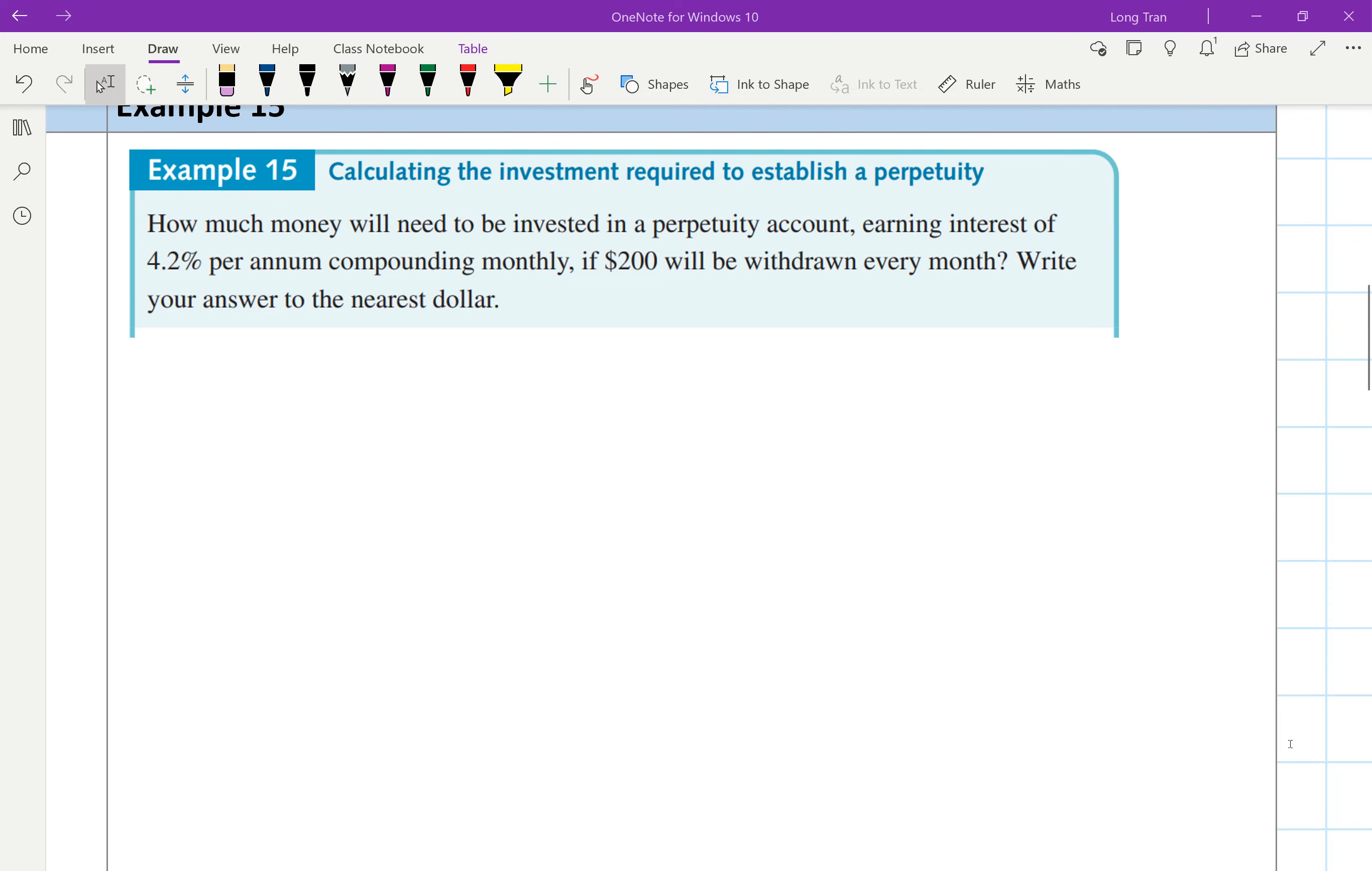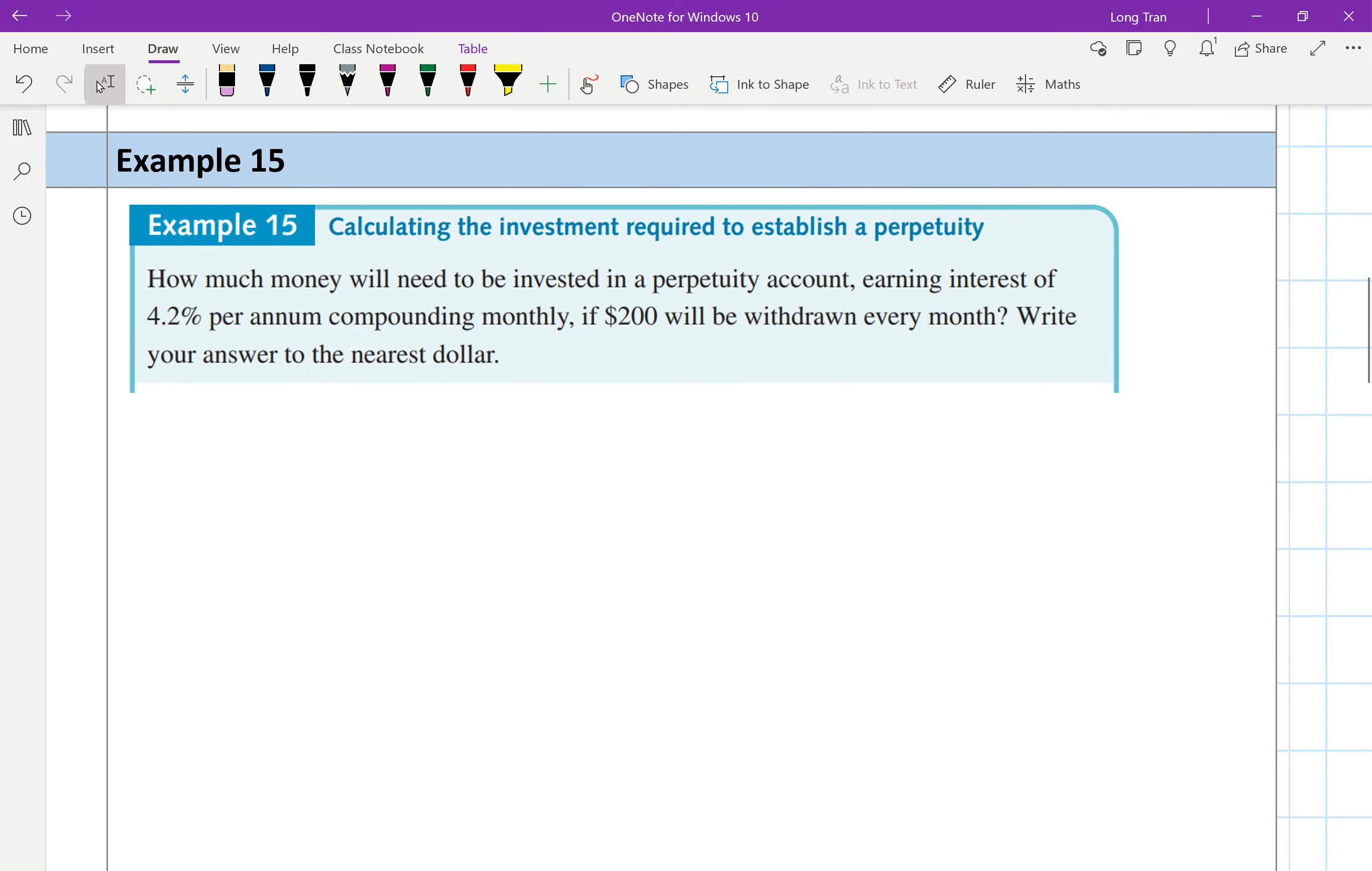This is example 15. We're now going to calculate the investment required to establish a perpetuity. How does perpetuity happen? Remember, you are the individual and you are providing money to an institution or organization.